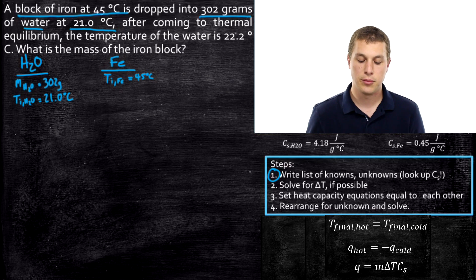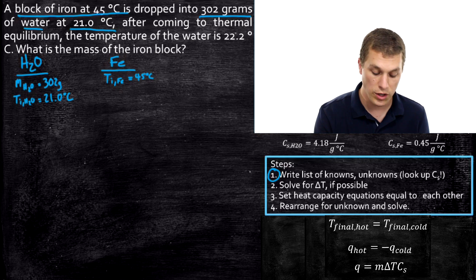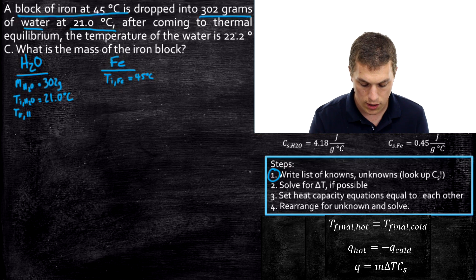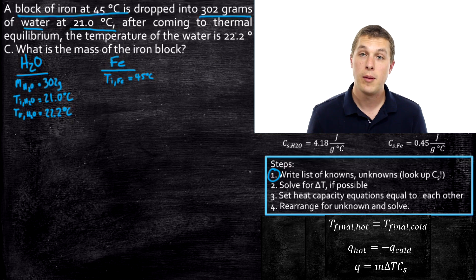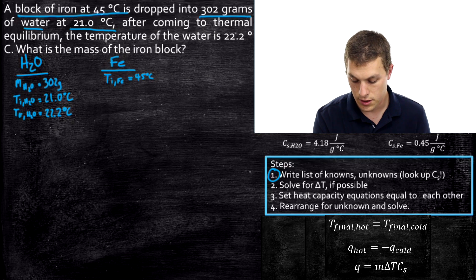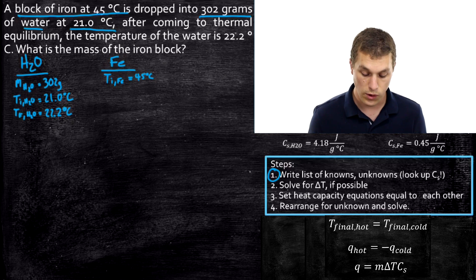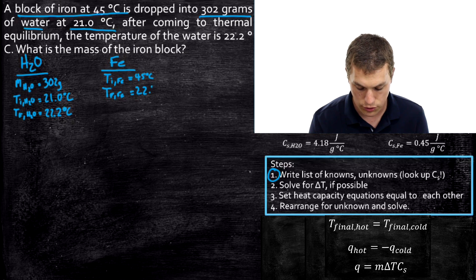That also tells us something else: things in thermal equilibrium are at the same temperature. So our iron at the end of this process is the same temperature as the water. We know T_final of iron as well — it's exactly the same as the water at 22.2 degrees Celsius.